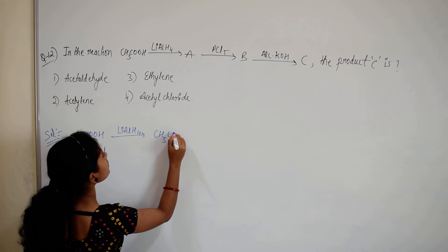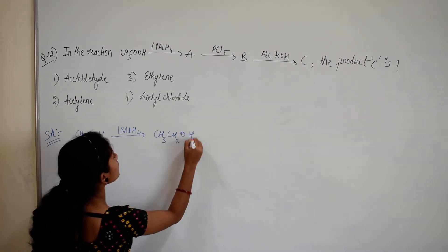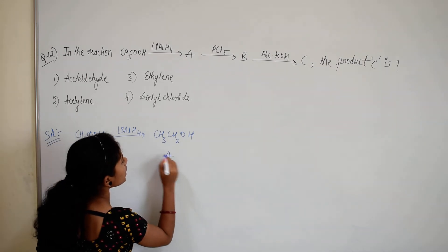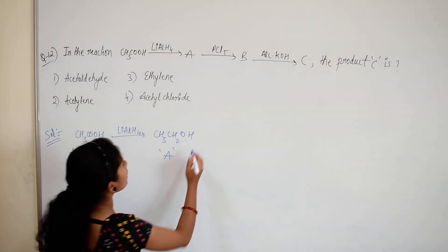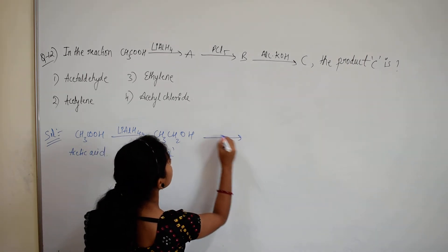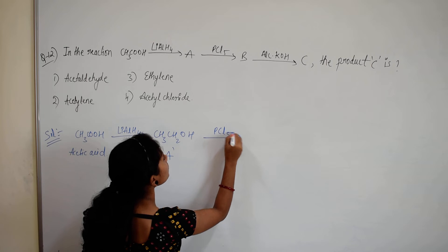That is CH3CH2OH. So we got the product as A, ethanol, and this is further reacting with PCl5.